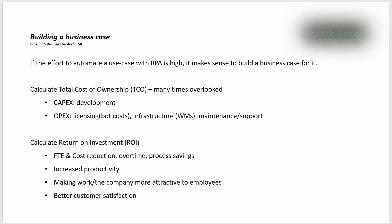It's important to look at the business case from two perspectives: total cost of ownership (TCO) and return on investment (ROI). The total cost of ownership is many times overlooked or not considered completely. It typically has two elements: one is the capex investment — the investment in developing the actual automation, the actual bot — and there is also an opex part, which includes licensing costs for attended or unattended bot licenses, infrastructure such as virtual machines, and maintenance and support after go-live — who will handle bugs and any issues that arise.